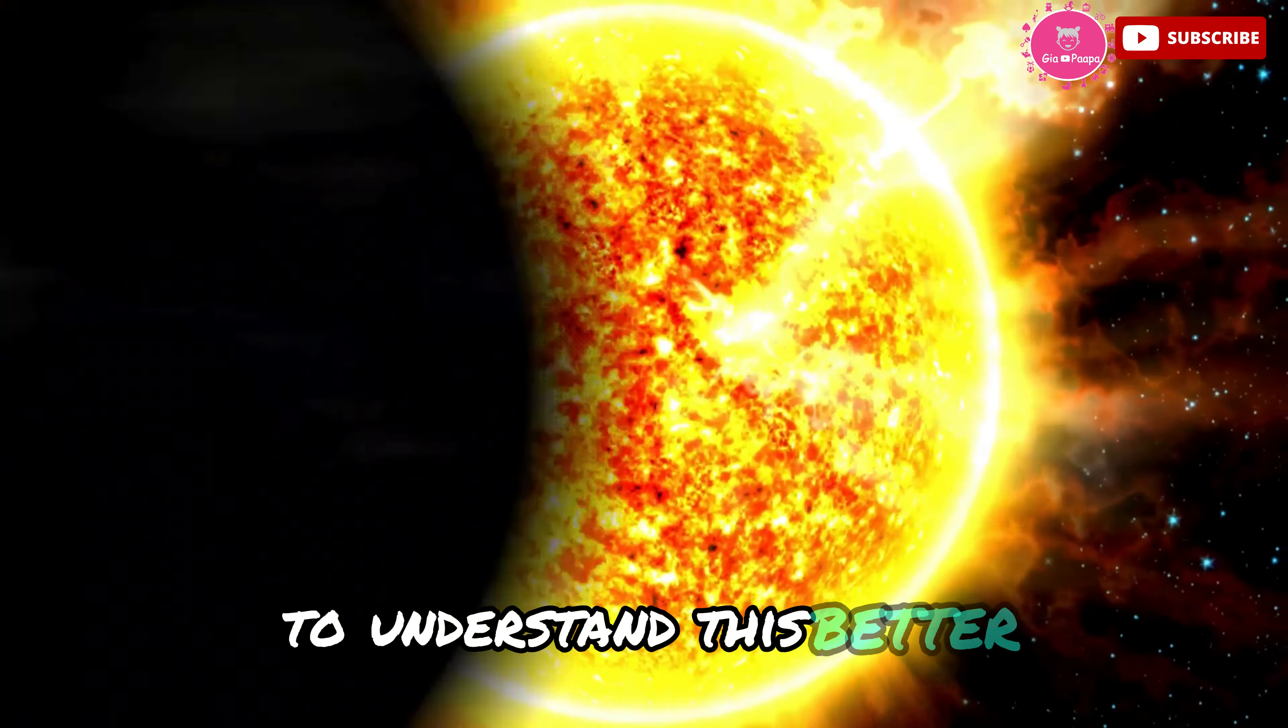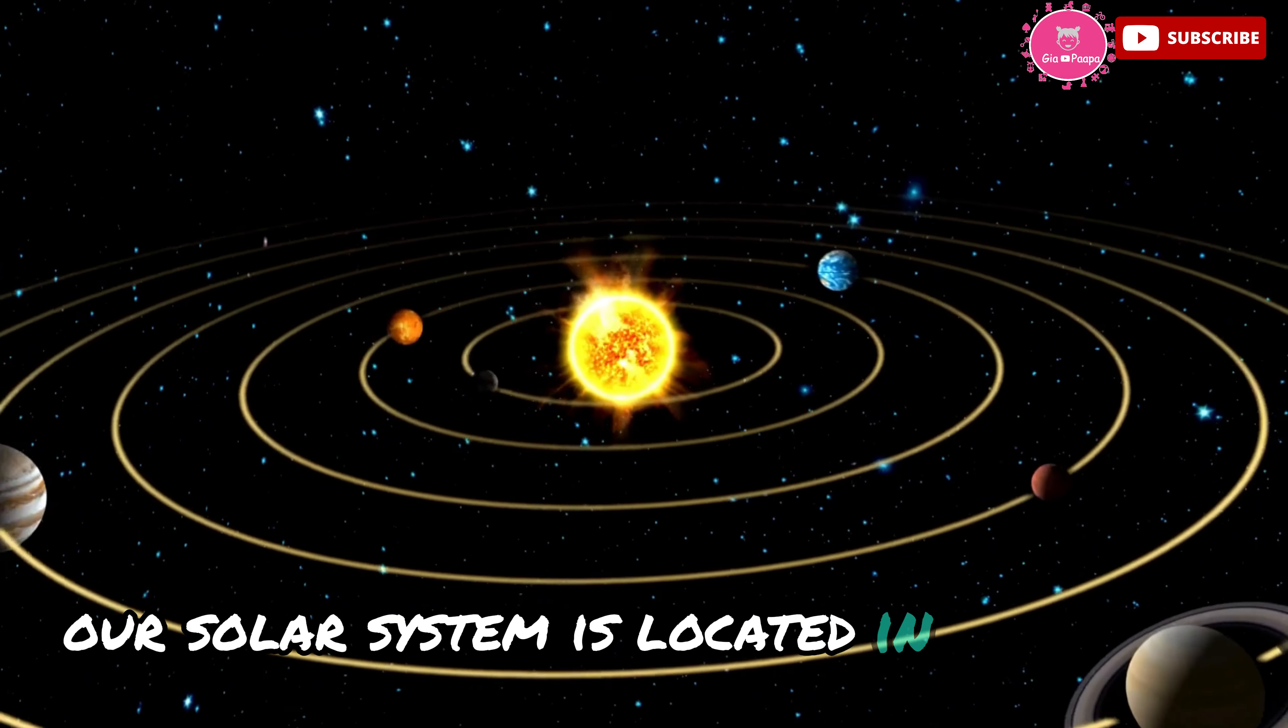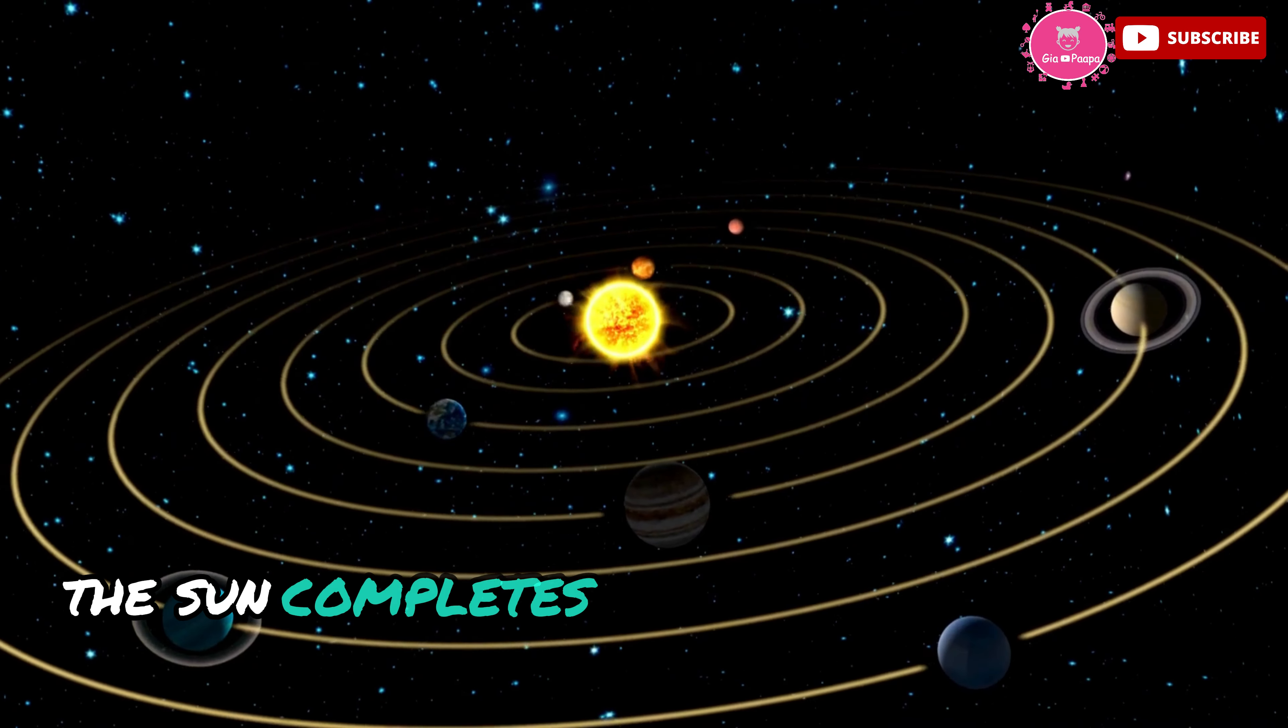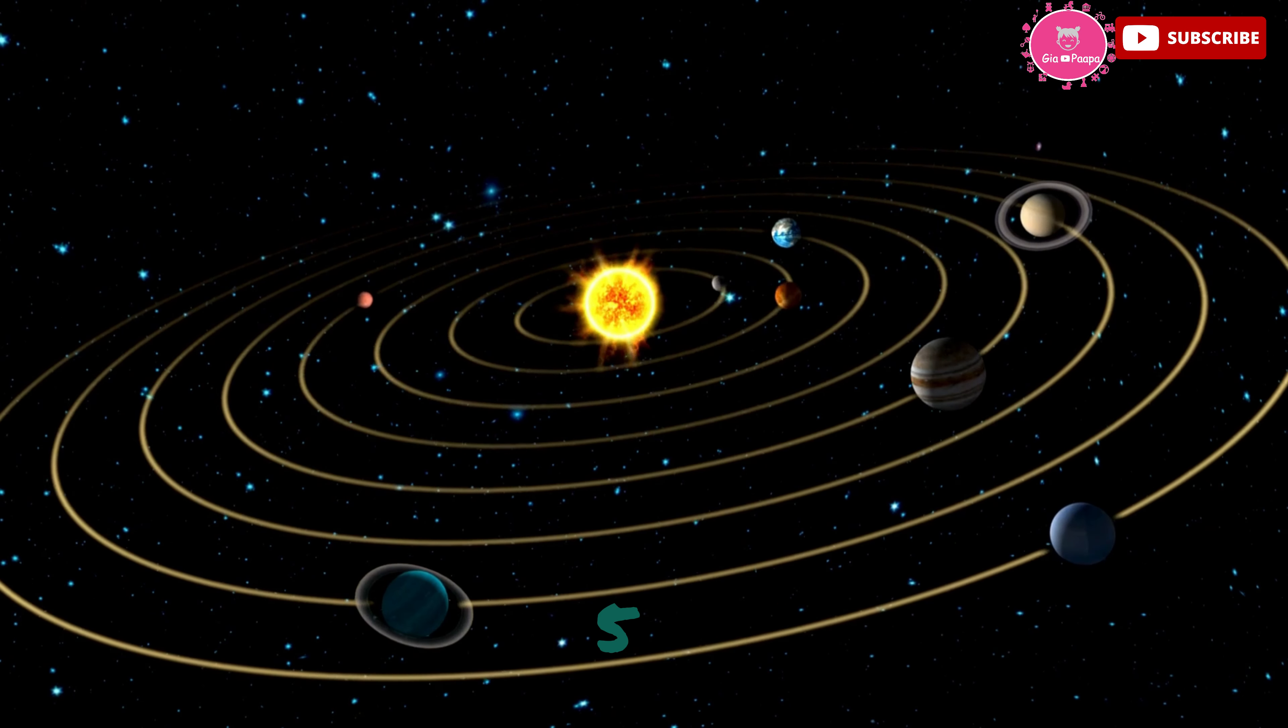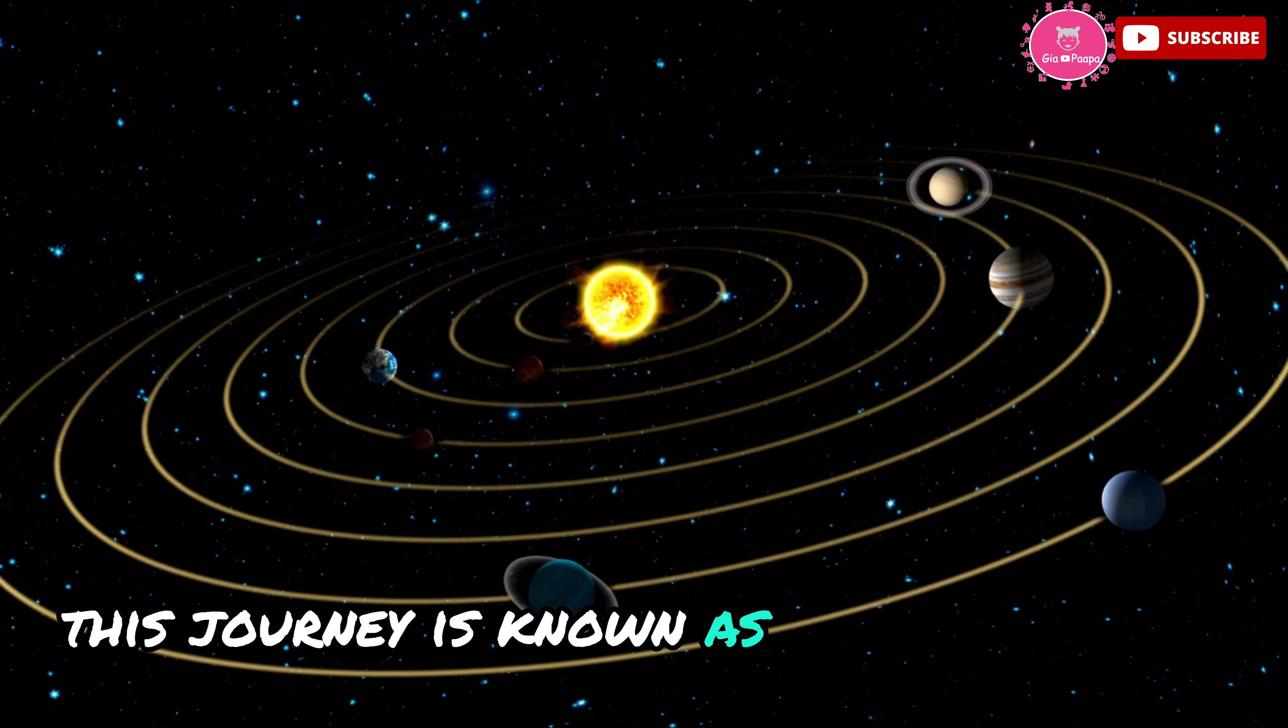To understand this better, let's break it down. Our solar system is located in the Orion arm of the Milky Way galaxy. The sun completes one orbit around the galaxy's center every 225-250 million years. This journey is known as a galactic year.